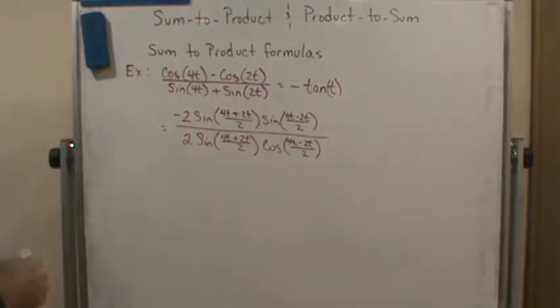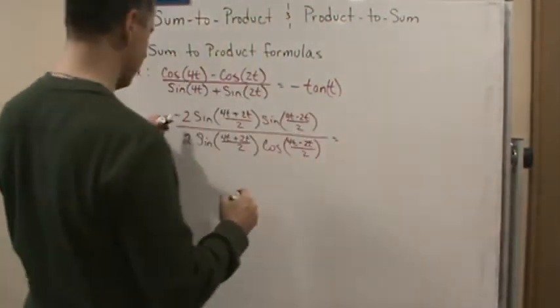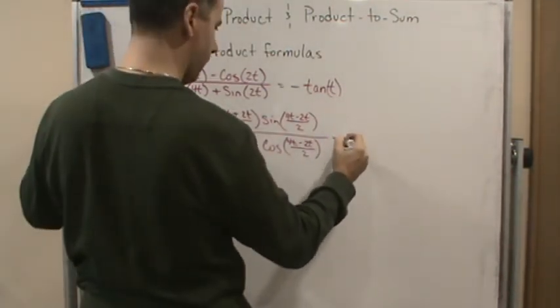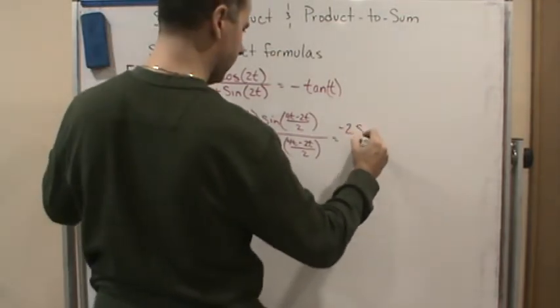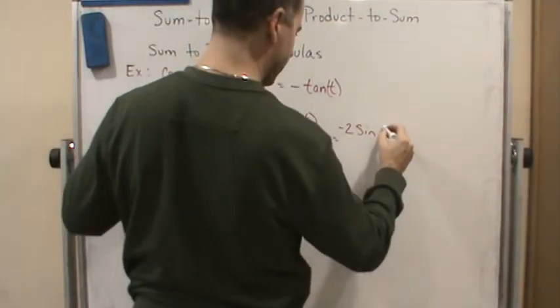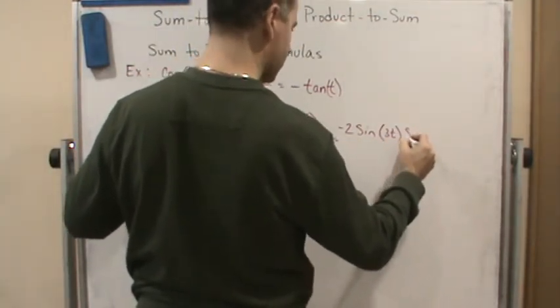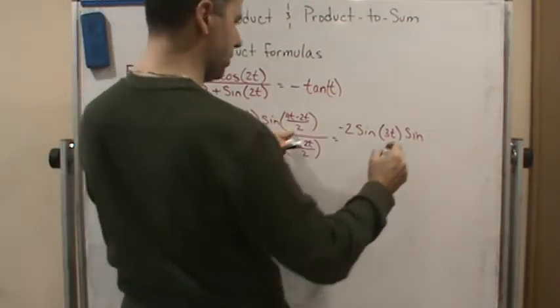Now guess what, I just have to simplify this thing, so let's do that. So now I'm going to simplify the arguments. So this is going to be negative 2 and this is going to be sine of what? 6t over 2 which is 3t times sine of what? This is going to be 2t over 2 which is just t.